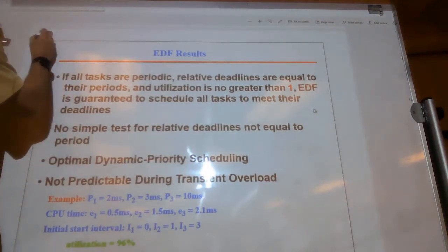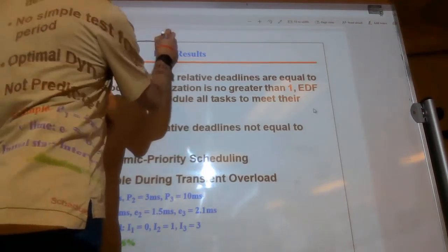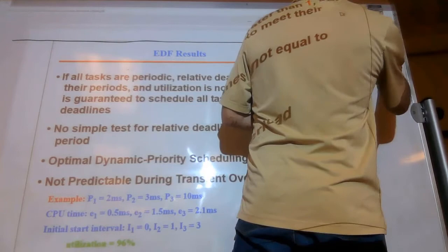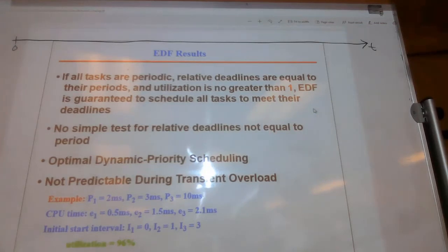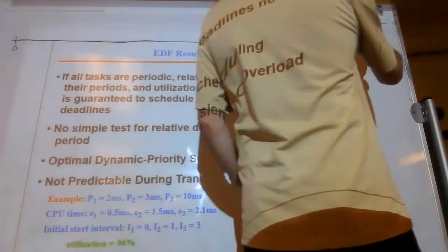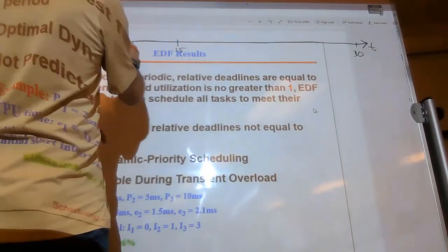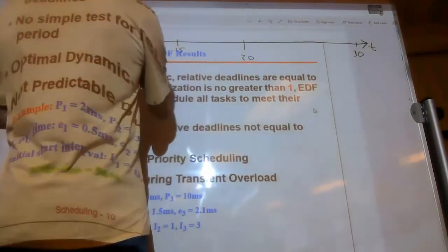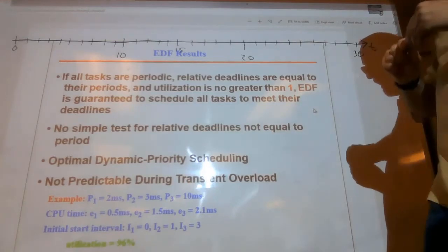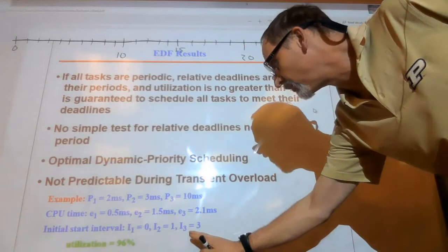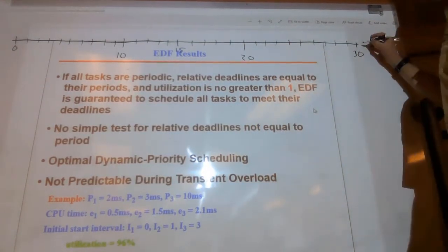What I'm going to do is use this line to sketch out a timeline — this is a good way to solve these problems. We're going to start at zero and run out for 30 milliseconds, because the lowest common multiple of those periods is 30. But I'm going to need to go a little bit past 30 because we have initiation times that start at zero, one, and three, so I'm going to go out to 33 milliseconds to get a full test of the entire thing.